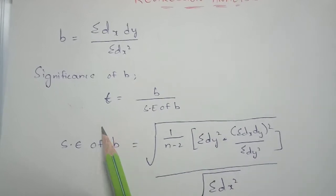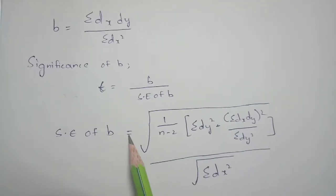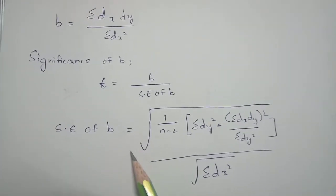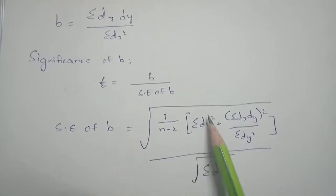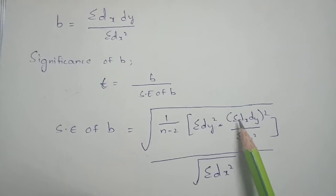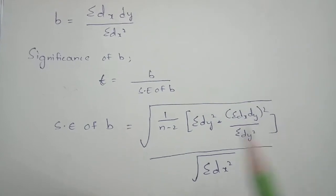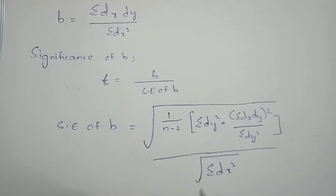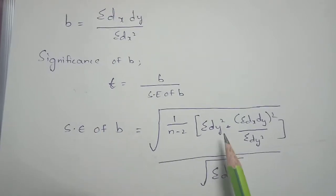If they ask for the significance of B, you apply this formula: significance of B equals root of (1 divided by n minus 2) multiplied by the whole expression Sigma DY squared minus (Sigma DX·DY whole squared divided by Sigma DY squared), all divided by root of Sigma DX squared.